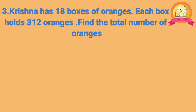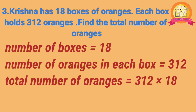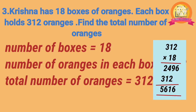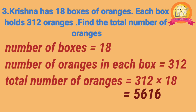Third problem: Krishna has 18 boxes of oranges. Each box holds 312 oranges. Find the total number of oranges. Solution: number of boxes is 18, number of oranges in each box is 312. Total number of oranges: multiply 312 with 18. After multiplying, we get 5,616. Therefore, total number of oranges is 5,616.